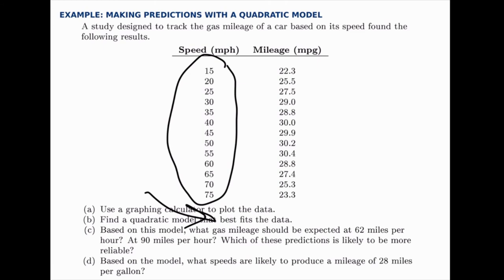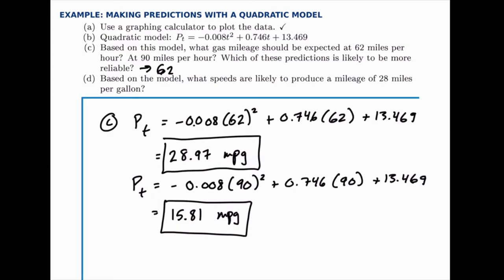The 62 miles per hour is called interpolation because it's within the range of data that we've made measurements for. The 90 is called extrapolation because it's beyond what we've seen. So the prediction at 62 miles per hour is likely to be more reliable. Without knowing anything more specific, we can make that judgment already.